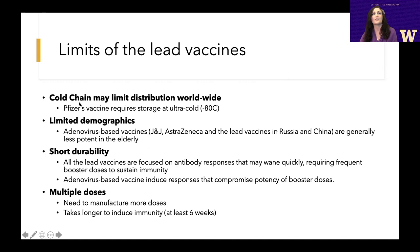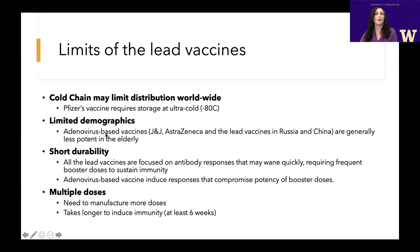I want to emphasize there are going to be some limits of these lead vaccines. One issue is the cold chain — what's required to maintain vaccine stability during distribution. In Pfizer's case, it requires ultra-cold storage, which limits where it can be shipped. Moderna's is a little better in that it doesn't require ultra-cold, but it still depends on refrigeration and a freezer, which could pose a problem for worldwide distribution.